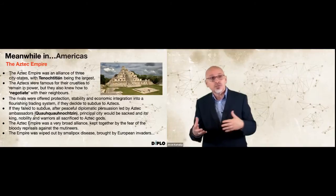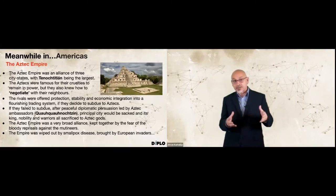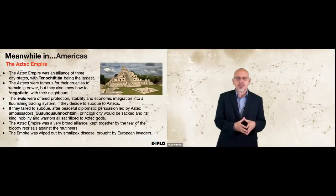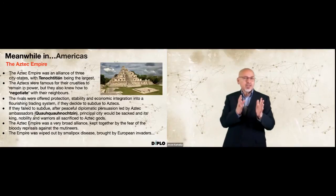If a city or region failed to subdue after peaceful diplomatic persuasion led by the Aztec ambassador, the principal city would be sacked and its king, nobility and warriors all sacrificed to Aztec gods — with all the kings and diplomats of the subdued city forced to witness this gruesome act. That was in a way a carrot and stick policy — we saw it with the Mongols and we see it until our days: either subdue to the power or you will be forced to. Today we have much more sophisticated methods, but that remains an important technique.